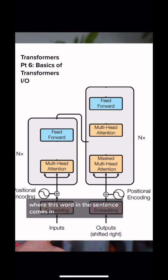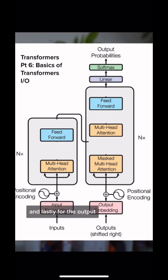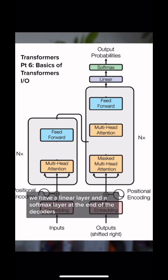By adding a positional encoding, you are adding information with each word that tells the model where this word in the sentence comes. Lastly, for the output, we have a linear layer and a softmax layer at the end of the decoders, so the output can be transformed into something we can understand.